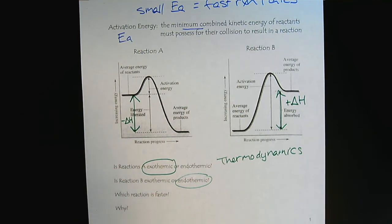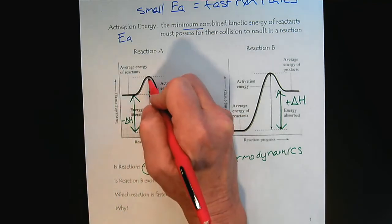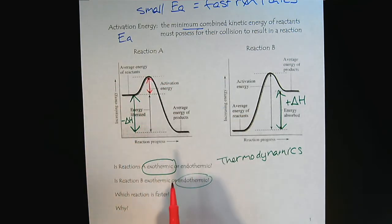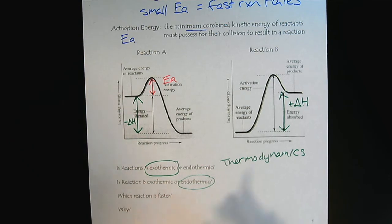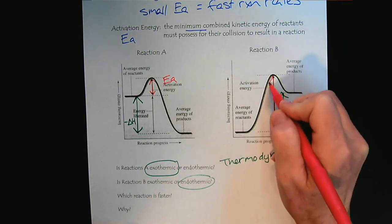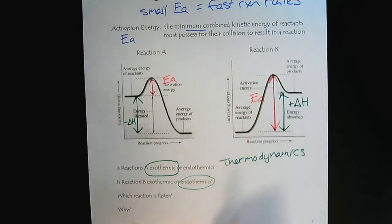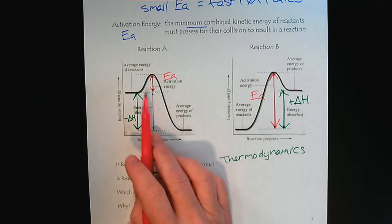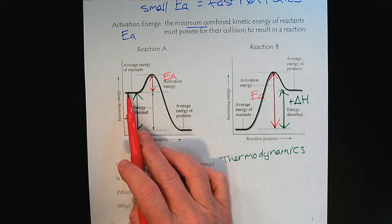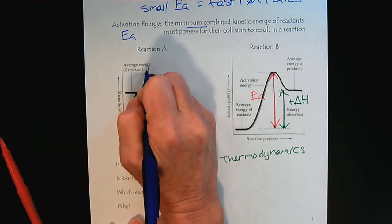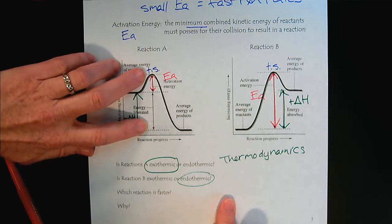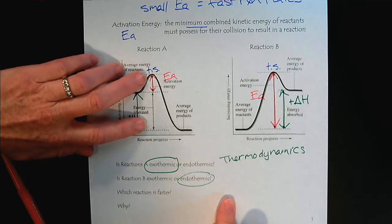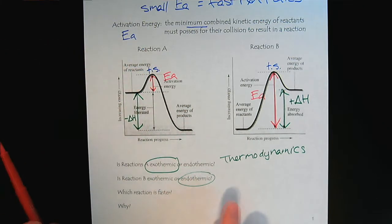Now let's get to the new stuff — kinetics. Which reaction is faster? The rate is all about the activation energy. Here is the activation energy of reaction A, and here is the activation energy of reaction B. When drawing the activation energy, it's the energy from the reactants to the transition state — the maximum energy that needs to be possessed by the reactants for the reaction to occur.